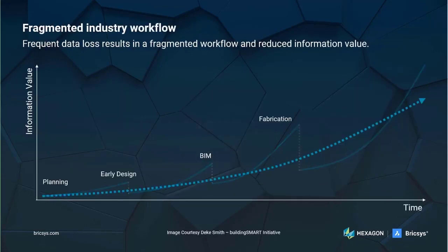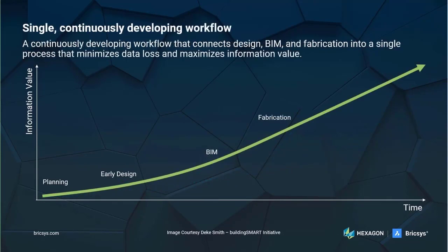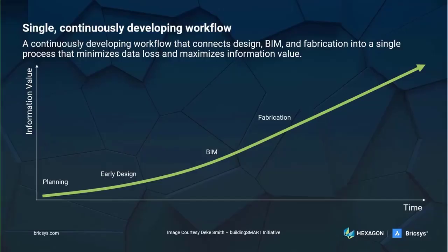Our solution to the fragmented industry workflow is truly different from any other vendor. The BricsCAD BIM workflow starts with direct modeling of generic solids, but it continues with the gradual development of detail powered by AI and machine learning. The same elements can be evolved throughout the project lifecycle by adding more and more detail. The BIM elements can be directly converted to fabrication models in BricsCAD Mechanical. We call this the BricsCAD Ultimate Platform — a unified workflow with continuously developing level of detail that connects design, BIM, and fabrication into a single process, all on a shared DWG platform. This avoids the rework and information loss caused by the current fragmented industry workflow.